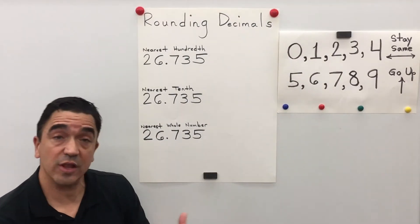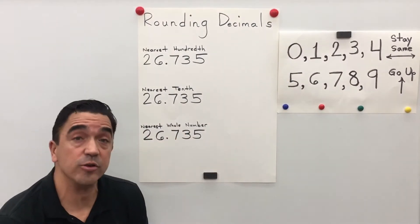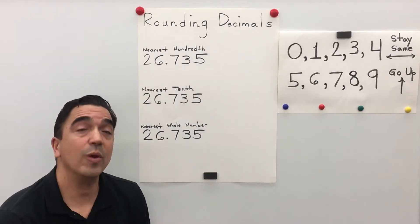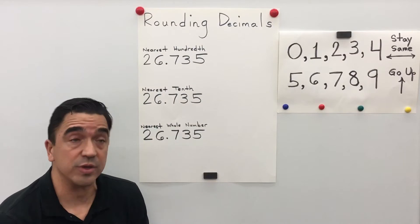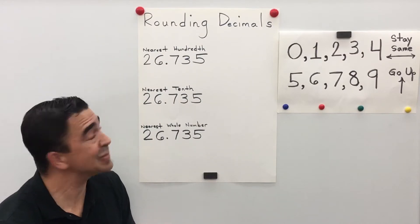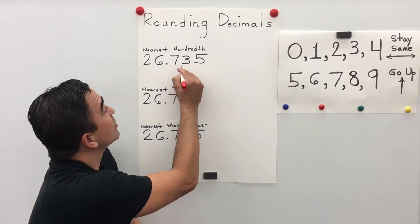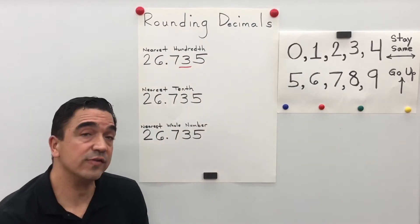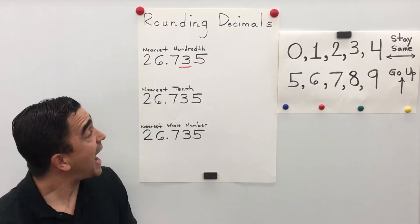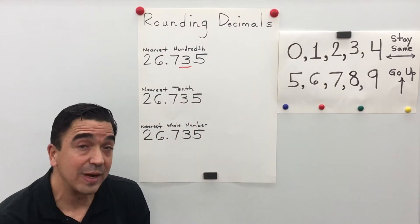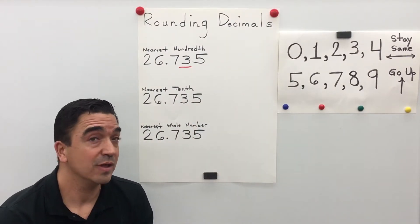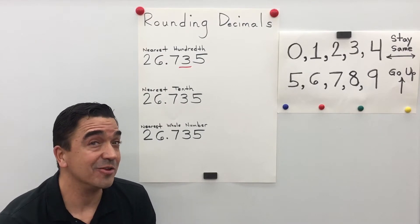Let's start with the first one. Let's round to the nearest hundredth. But first we have to identify which digit is in the hundredth. Three is in the hundredth and the five in the thousandths is going to tell the three what to do. Don't forget we have a little trick.